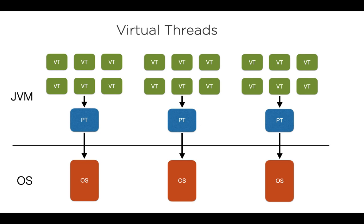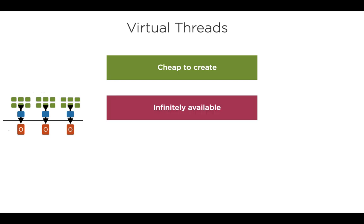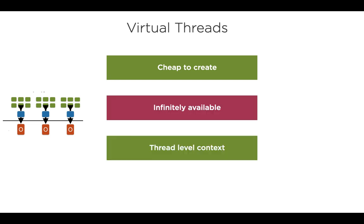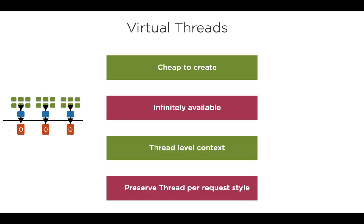Virtual threads are an instance of java.lang.Thread and are not tied to a particular OS thread. Requests run in the context of a virtual thread, and when they need to make a blocking call, the runtime makes a non-blocking OS call and suspends the virtual thread until it can be resumed later. These are threads which are cheap to create and almost infinitely available, and they get the same benefits of thread-level context and request tracing as before. Since virtual threads are cheap, they should not be pooled — a new virtual thread should be created for each task. So these threads preserve the reliable thread-per-request style while utilizing the hardware optimally.